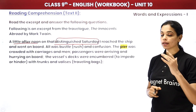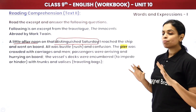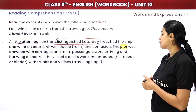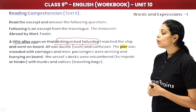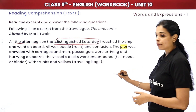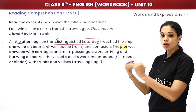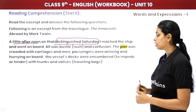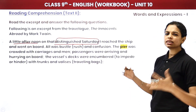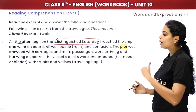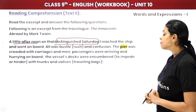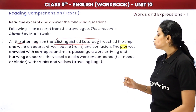All was bustle and confusion — there was rush and confusion everywhere. The pier — the pathway built over water to reach a ship — was crowded with carriages and men. Passengers were arriving and hurrying on board. The vessel's decks were encumbered with trunks and valises — the ship's deck was completely crowded and blocked with luggage and carry bags.